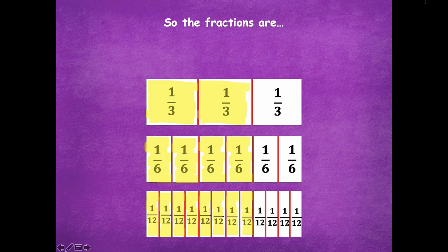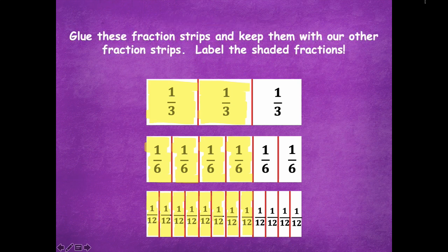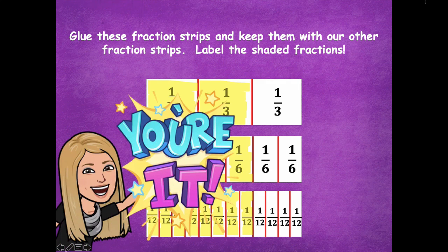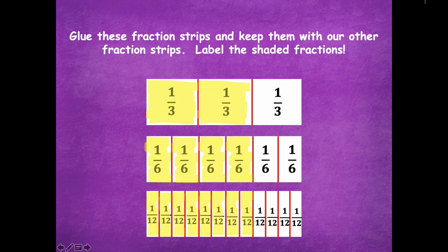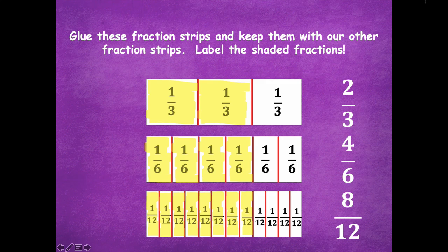The fractions are — what's that new word we've been learning about in these two lessons? Equivalent! Good job, friends. Now you're going to glue these fraction strips and keep them with your other fraction strips on that paper, then label the shaded fractions. Pause, do some gluing, label the shaded fractions, and then click play. The labels are two-thirds, four-sixths, and eight-twelfths — make sure you have those as your labels.